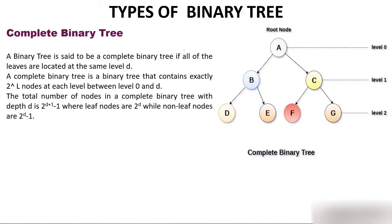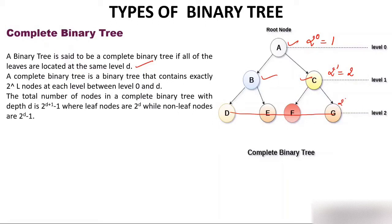Now comes the complete binary tree. A binary tree is said to be complete if all leaf nodes are located at the same level. In this figure, leaf nodes D, E, F, and G are all at the same level. Second, a complete binary tree contains exactly 2^L nodes at each level L. Level 0 has 2^0 = 1 node, level 1 has 2^1 = 2 nodes, and level 2 has 2^2 = 4 nodes.